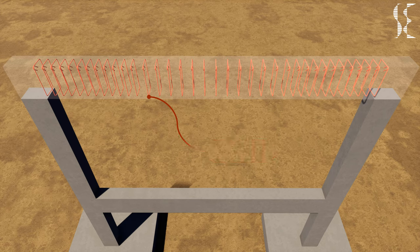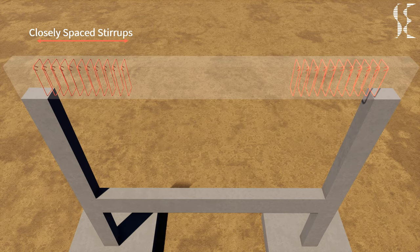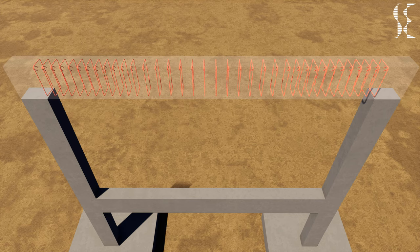Stirrups are closely placed near the support of the beam as shear force is maximum near the supports. The closely placed stirrups must be spread to a minimum distance of 2 times the depth of the beam. But if required by design, closely spaced stirrups may be distributed along whole length of the beam.